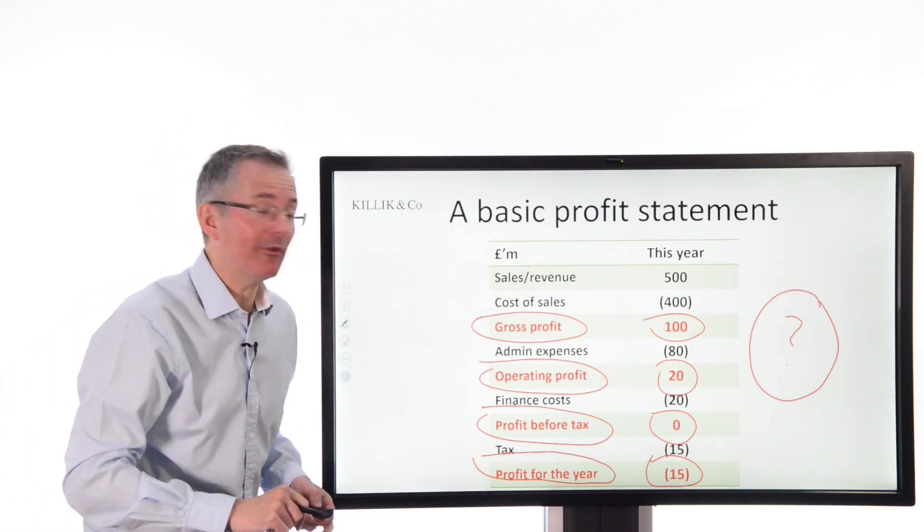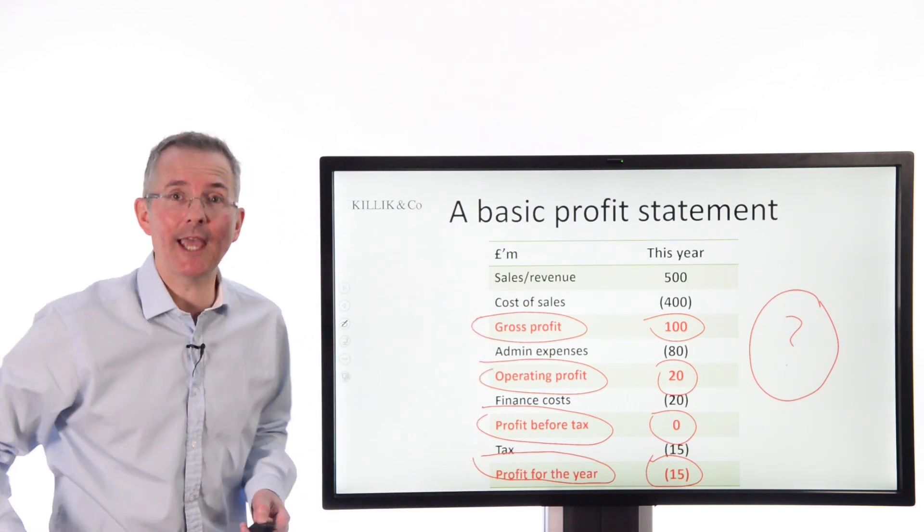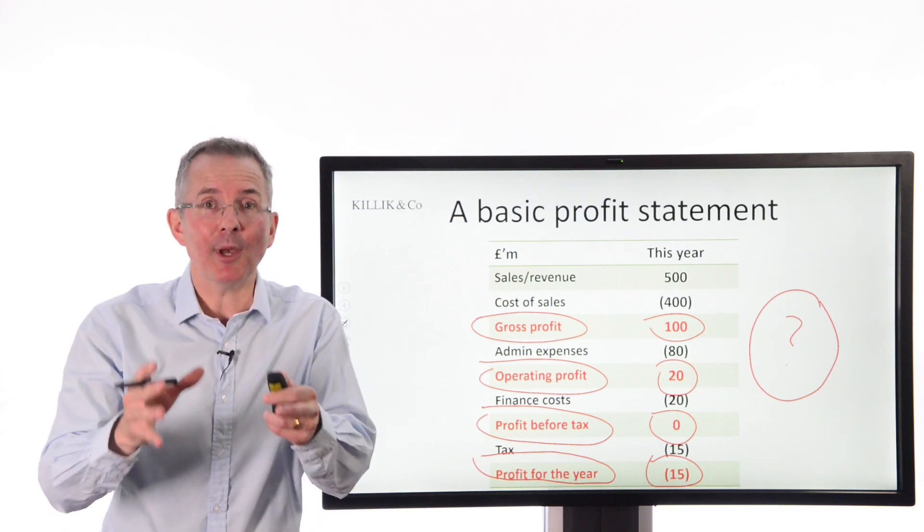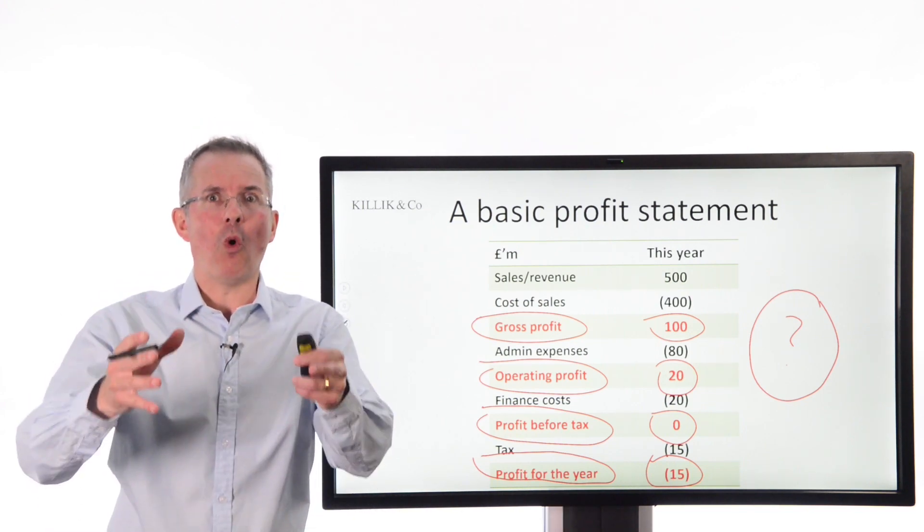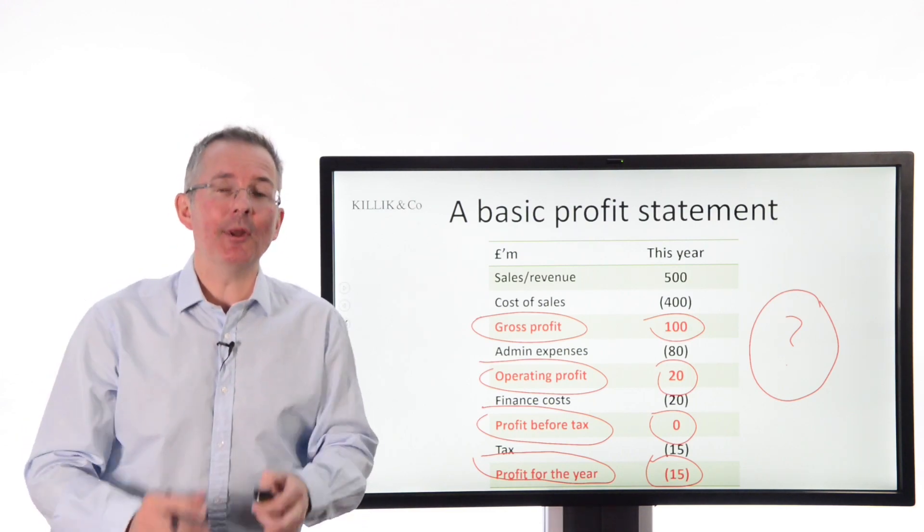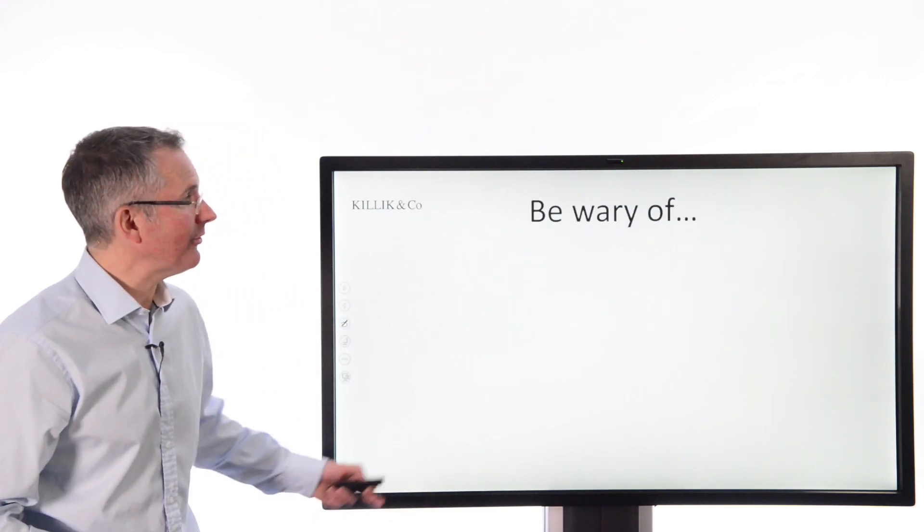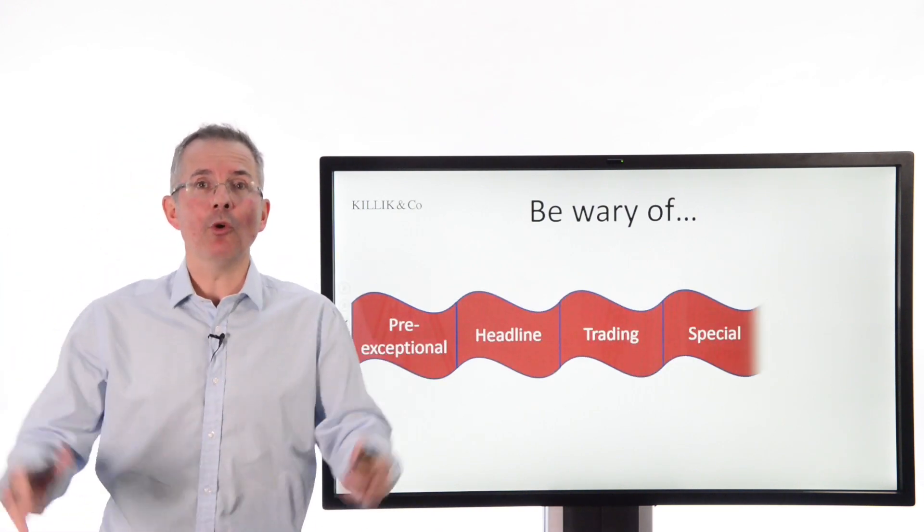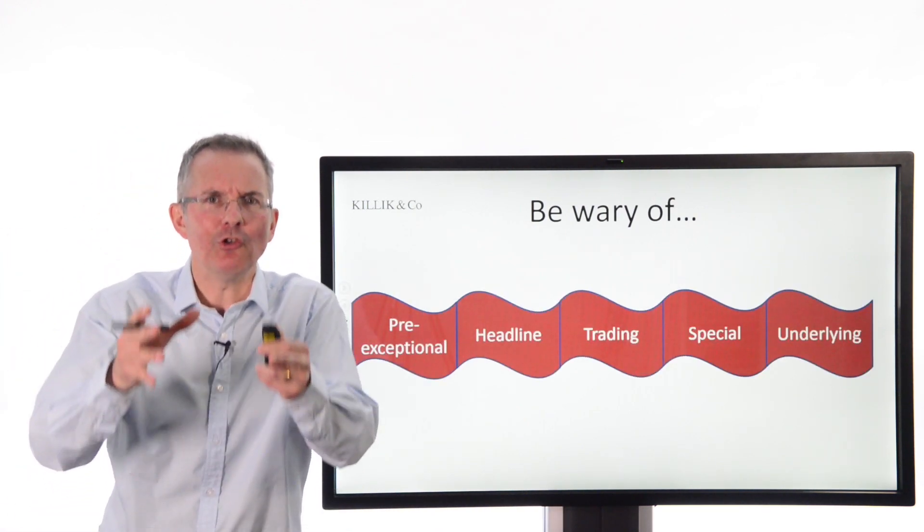Terry Smith, famous city investor, prefers gross profit in a lot of cases. So even when the company is just sticking to reporting what it's supposed to, you've already got at least four choices. Now I'm actually not dealing with that issue directly here, I deal with it in other videos. I'm dealing with companies saying actually we don't like any of those, we want investors to focus on our own version of profit.